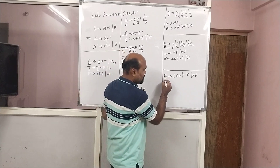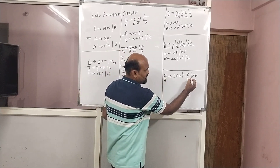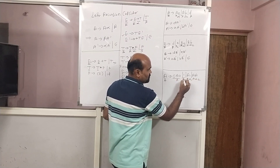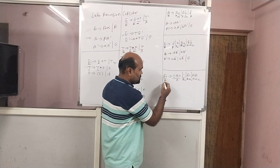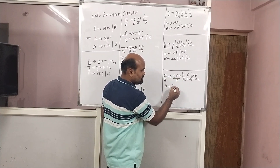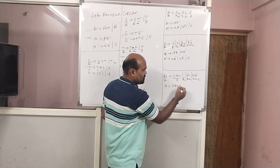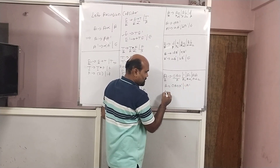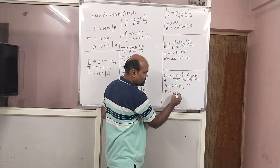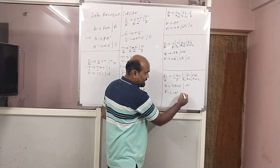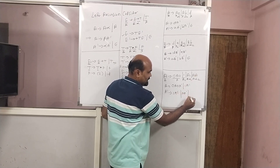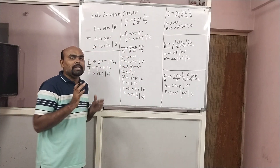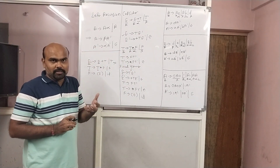In the last example, A has alpha one and alpha two, and there are two betas — beta one and beta two. To solve this: A gives beta one A-dash slash beta two A-dash, and A-dash gives alpha one A-dash slash alpha two A-dash slash epsilon. This is how we remove left recursion from the grammar.